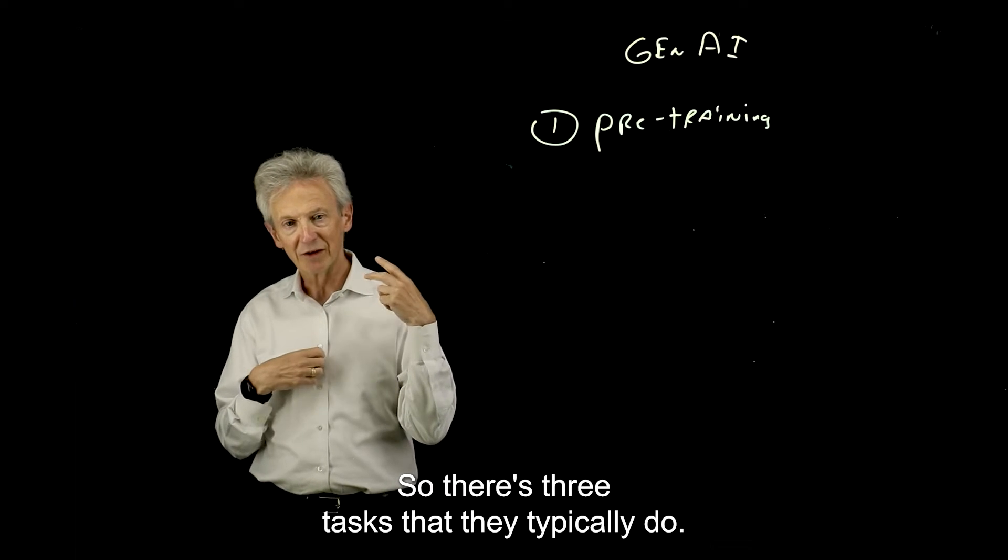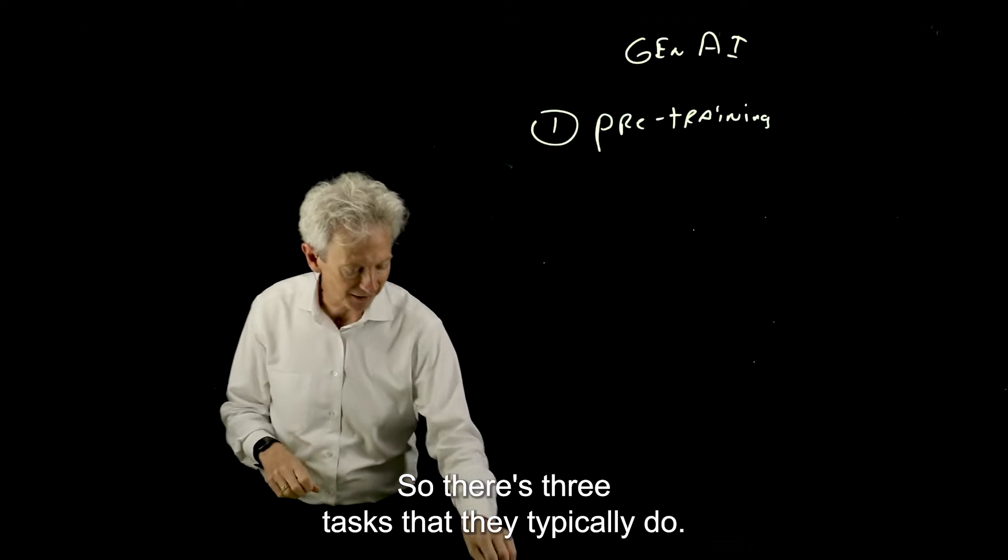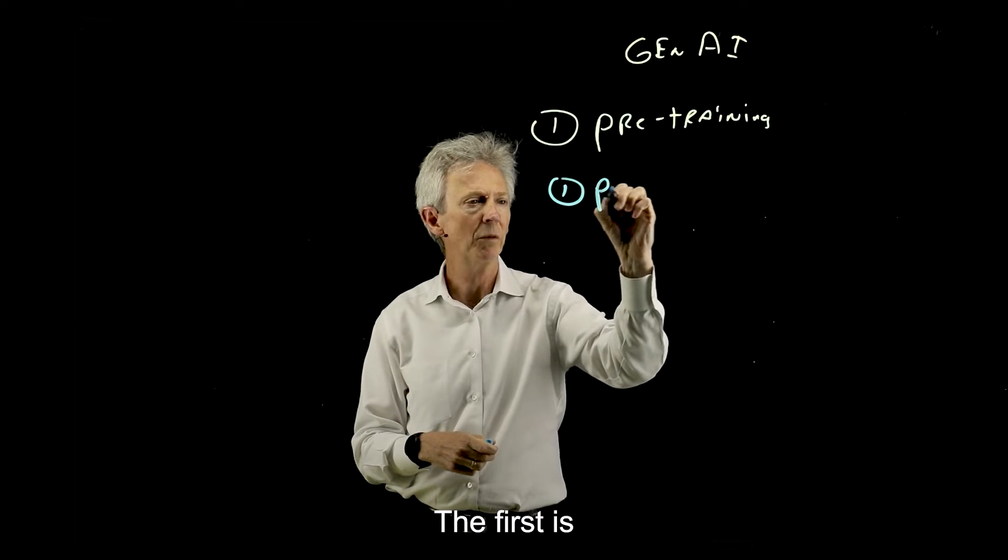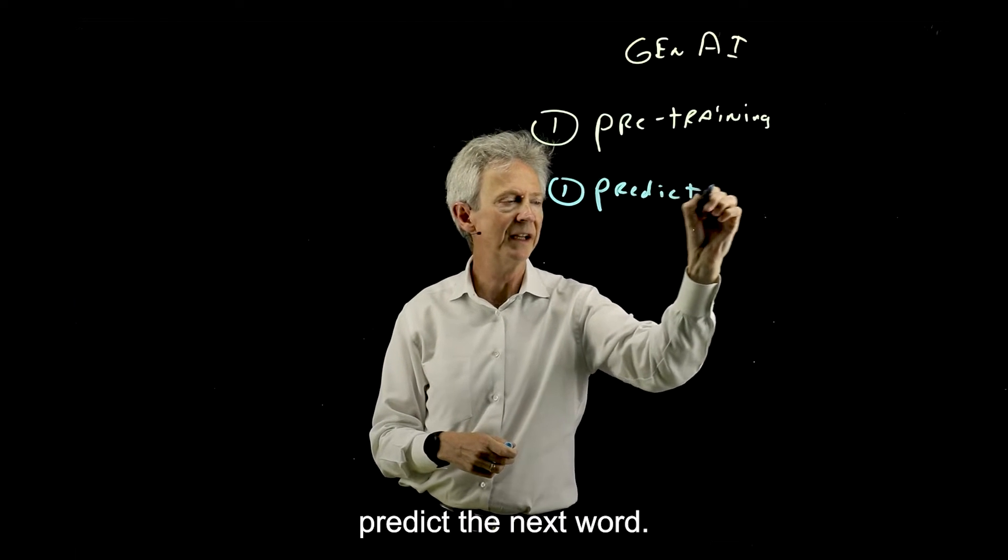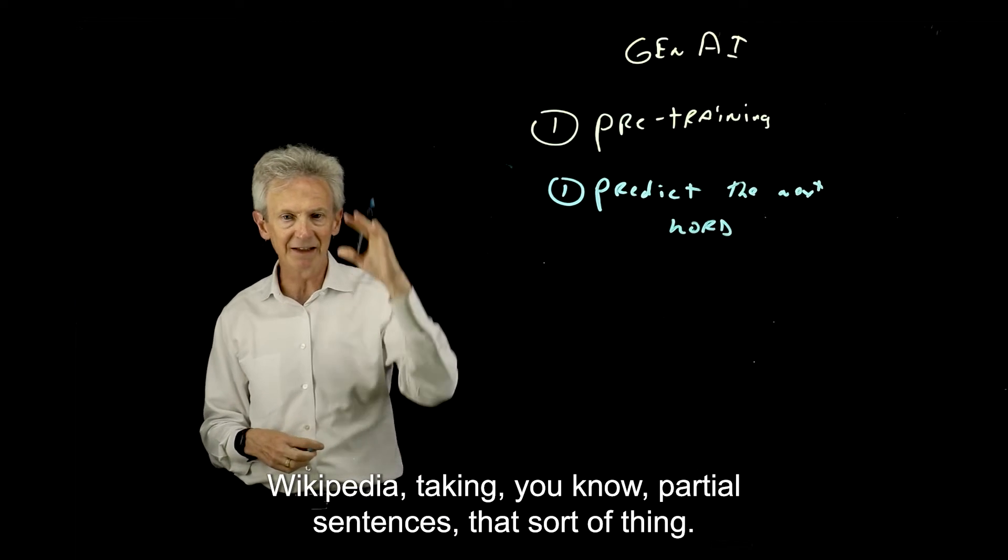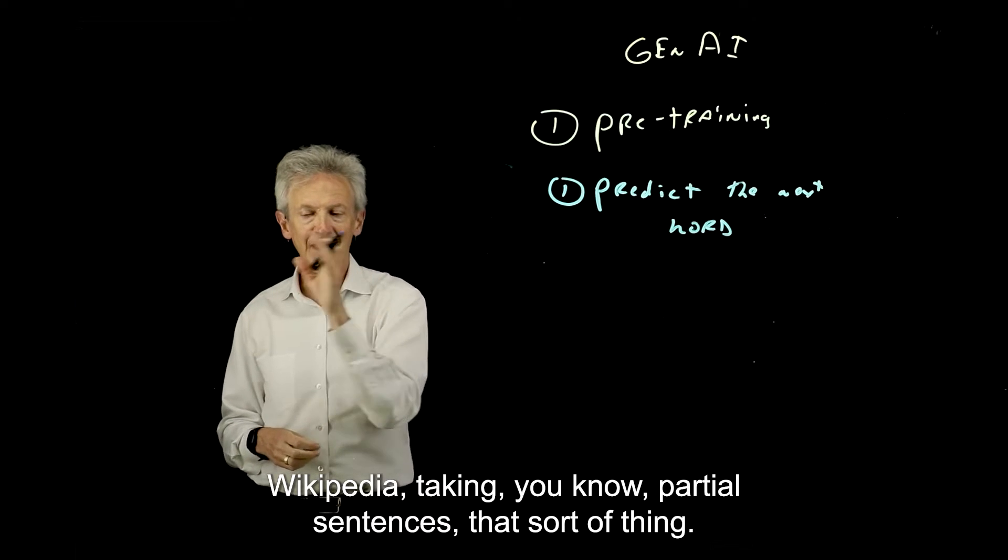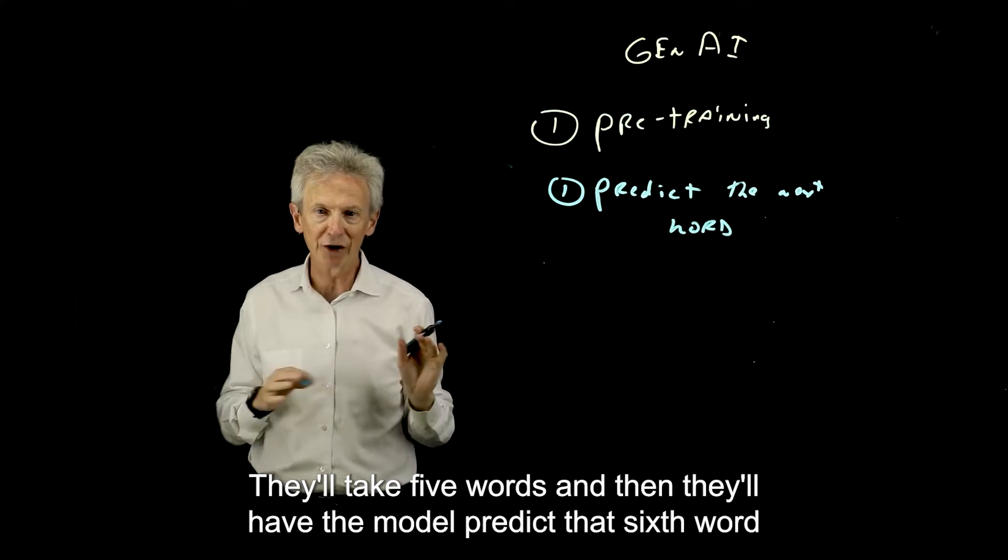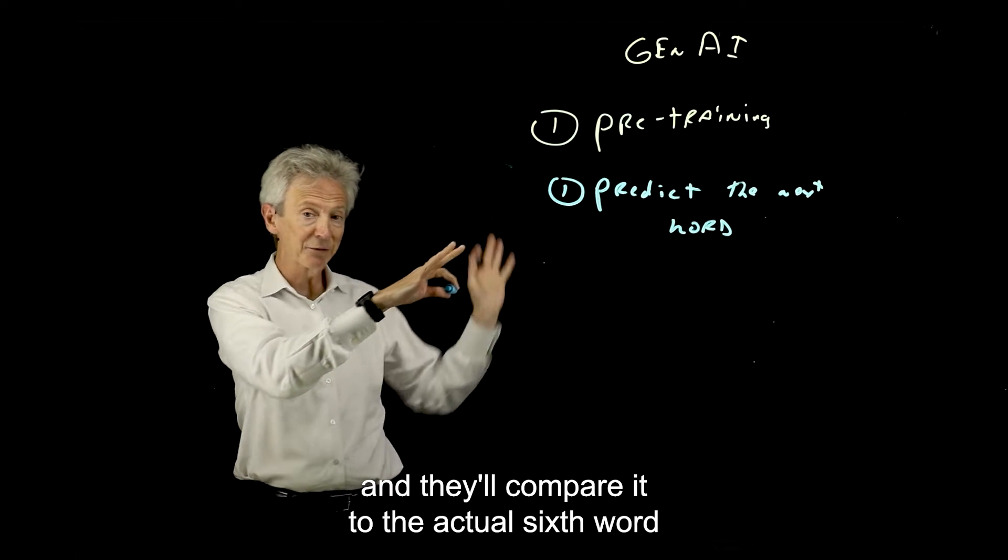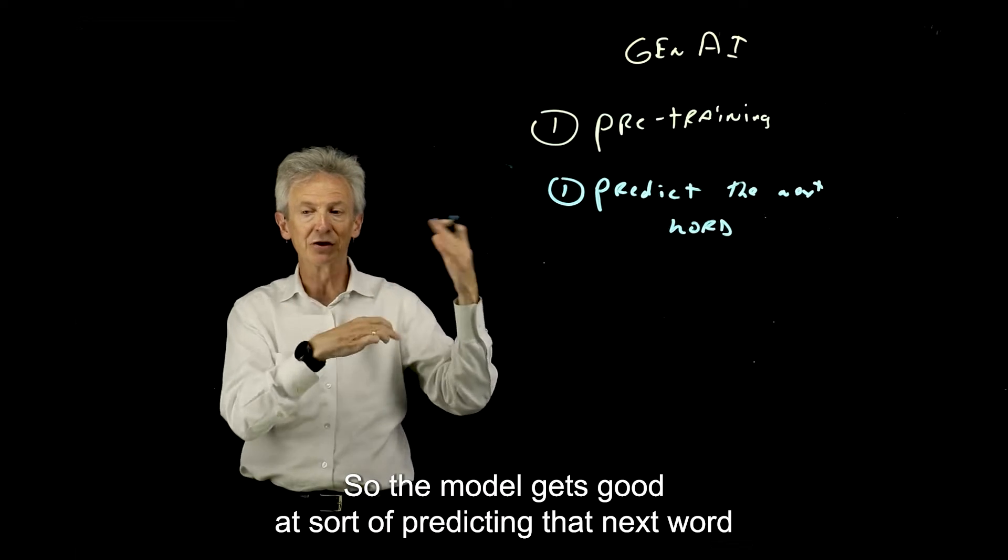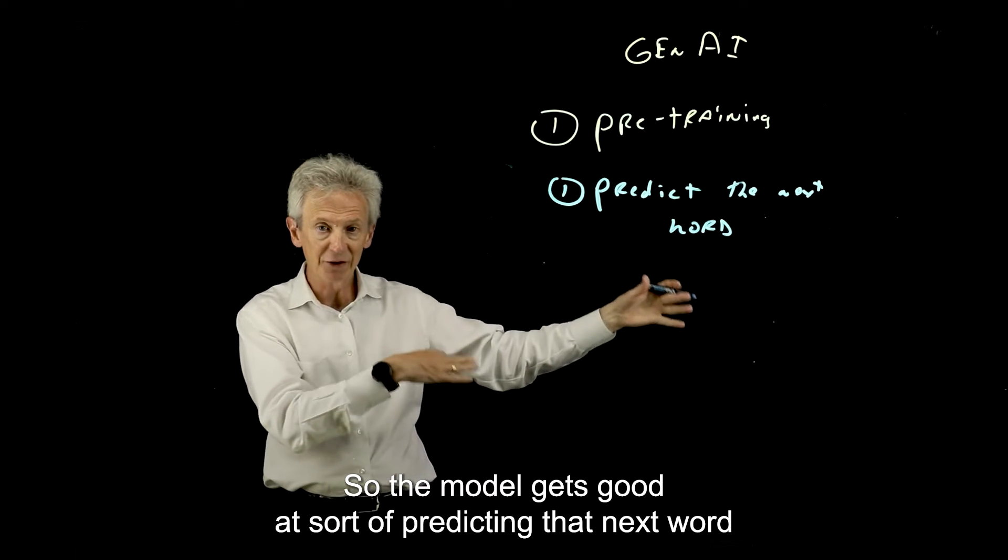There are three tasks that they typically do. The first is one that you might already know: predict the next word. So let's say they're ripping through Wikipedia, taking partial sentences, that sort of thing. They'll take five words, then have the model predict that sixth word, compare it to the actual sixth word, and adjust the weights accordingly. So the model gets good at predicting that next word.